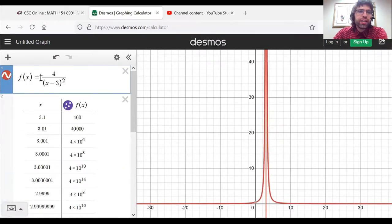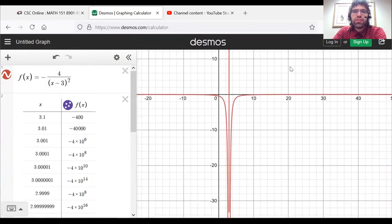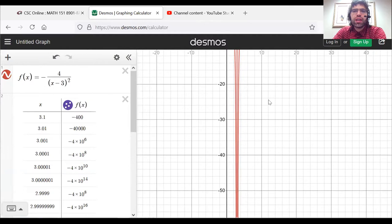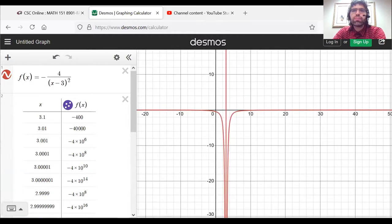If we put a negative sign here, this limit will become negative infinity. And we still have a vertical asymptote.